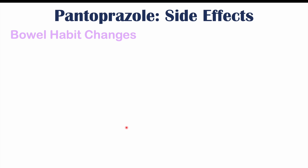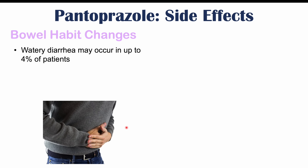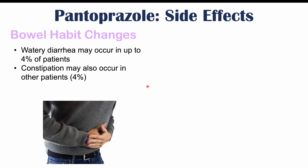Gastrointestinal manifestations include bowel habit changes. Watery diarrhea can occur in some patients that use pantoprazole and other PPIs, occurring in roughly four percent of patients. Some patients may also experience constipation, which can occur in roughly four percent of patients as well. Some patients may have both watery diarrhea and constipation, and some will have just one or the other. Increased flatulence can also be seen with pantoprazole use.